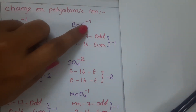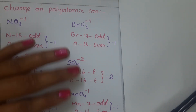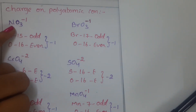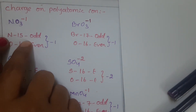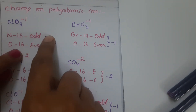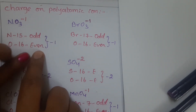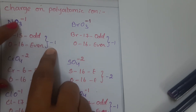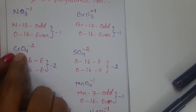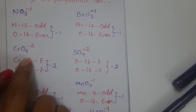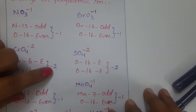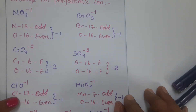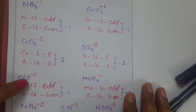Let us do a quick recap. To identify the charge on a polyatomic ion, you need to know the group numbers — no addition or subtraction, just remember the group numbers of the atoms. For NO3: nitrogen is 15th group (odd), oxygen is 16th group (even) — odd and even gives minus 1. For CrO4: chromium is 6th group (even), oxygen is 16th group (even) — both even gives minus 2.